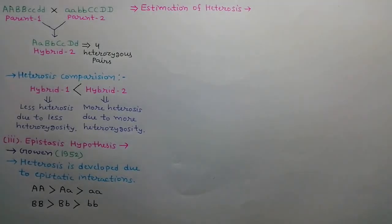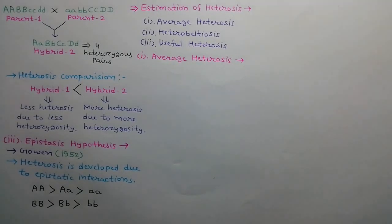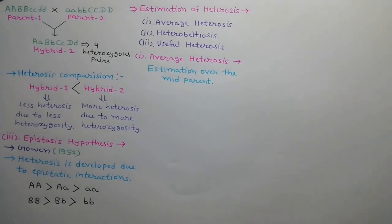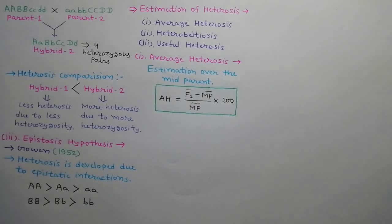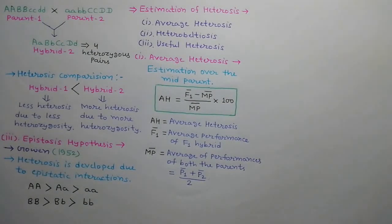Heterosis can be estimated by three ways: average heterosis, heterobeltiosis, and useful heterosis. The first is average heterosis. When heterosis is estimated over the mid-parent, it is called average heterosis. It can be estimated by the following formula: AH = (F1̄ − MP̄) / MP̄ × 100, where AH is average heterosis, F1̄ is the average performance of the F1 hybrid, and MP̄ is the average performance of both parents, i.e., (P1̄ + P2̄) / 2.